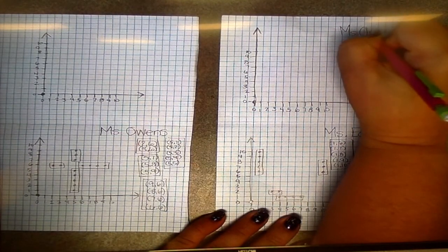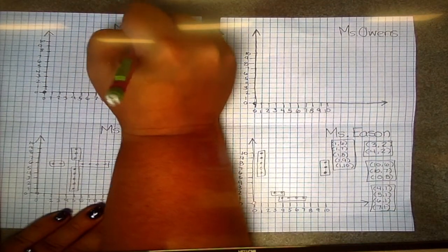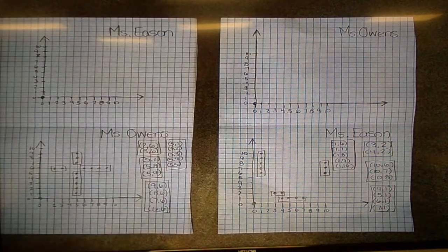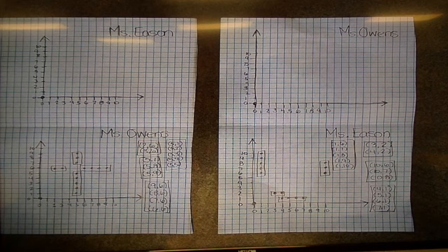So the first thing I'm going to do is I'm going to write my partner's name on the top part of my game board. So I'm going to play with Miss Owens, so Miss Owens' name would go at the top of my paper, and my name would go at the top of her paper.